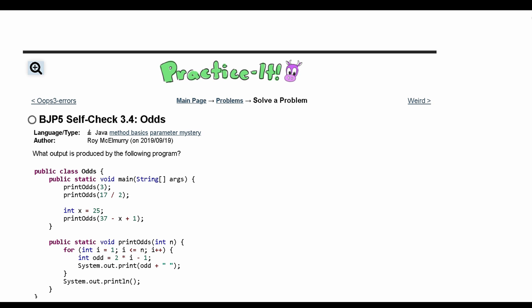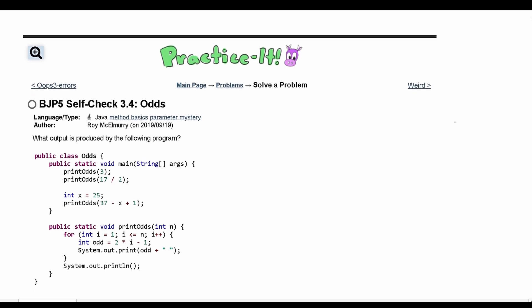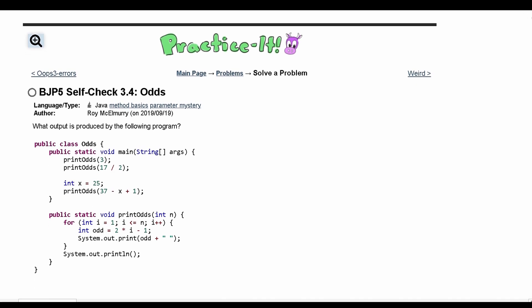For practice-it self-check 3.4 odds, we are asked what output is produced by the following program. We have a class and then we have a main method here and then a void method that gets called in our main method.